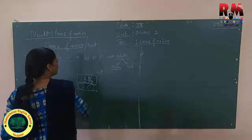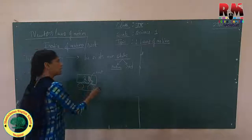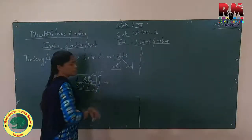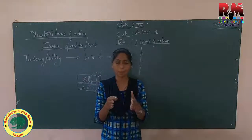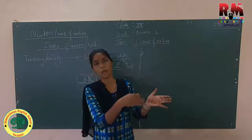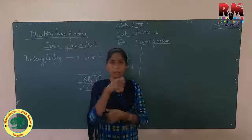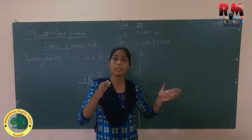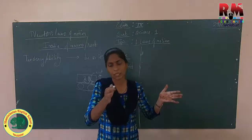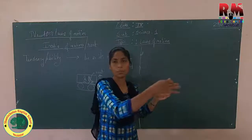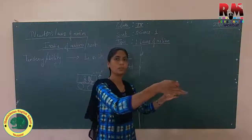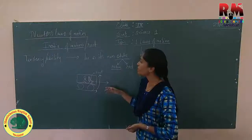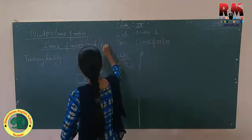Now, Inertia of Direction. You are sitting in the bus and it is in motion. Suddenly the bus turns left. Your tendency is to be in the same original direction, so you feel an outward pull — as if someone is pulling you outward. No one is pulling you, but your body's tendency is to continue in the initial direction. This is Inertia of Direction. So we have three types: Inertia of Motion, Inertia of Rest, and Inertia of Direction.